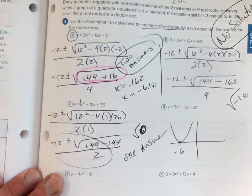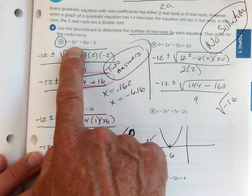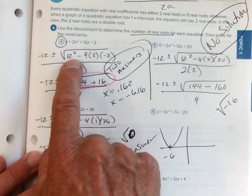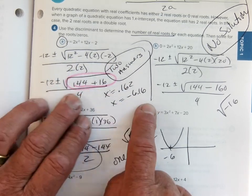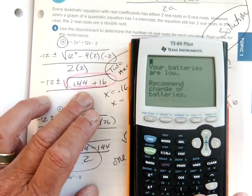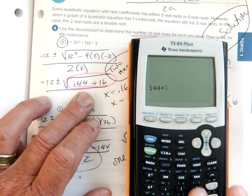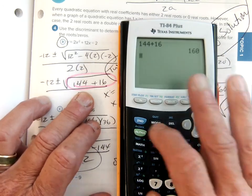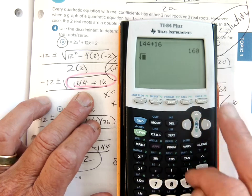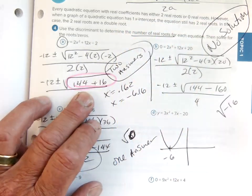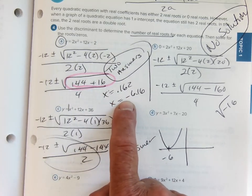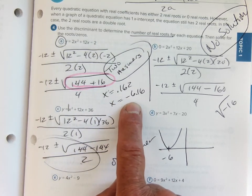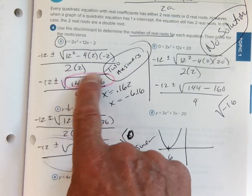The first example: we did negative b plus or minus the square root of b squared minus 4 times a times c. We evaluated it and got 144 plus 16, well that's positive. 144 plus 16 turns out to be 160, and when you take the square root of 160, you wind up with 12.6, but it's plus or minus, so you do get two answers. The two answers happen to be 0.162 and negative 6.12—two answers because you took the square root of a positive number.